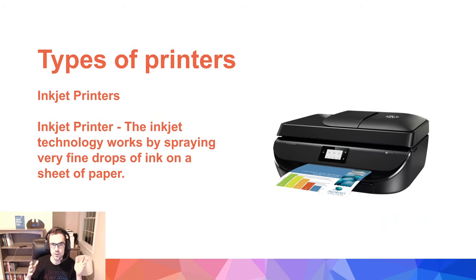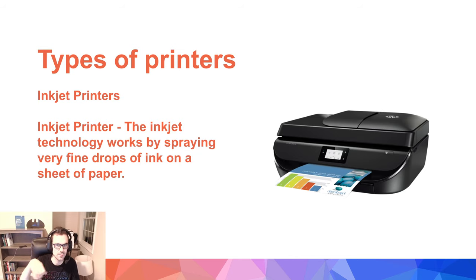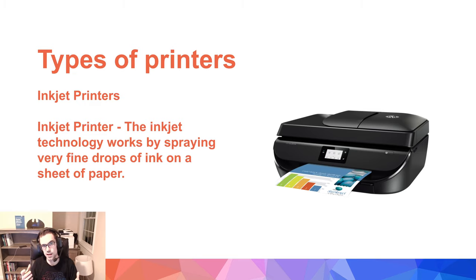Both monochrome and color printers have two forms, or two ways of printing within those categories. The first is inkjet printers. The inkjet technology works by spraying very fine drops of ink onto the sheet of paper — tiny dots. If you take a magnifying glass and look, you can see that. If you've ever looked at a newspaper under a magnifying glass, there are lots of little dots, and the same is true with inkjet. The droplets are ionized, which allows them to be directed by magnetic plates in the ink's path. As the paper is fed through the printer, the printer head moves back and forth and sprays thousands of small droplets on the page.